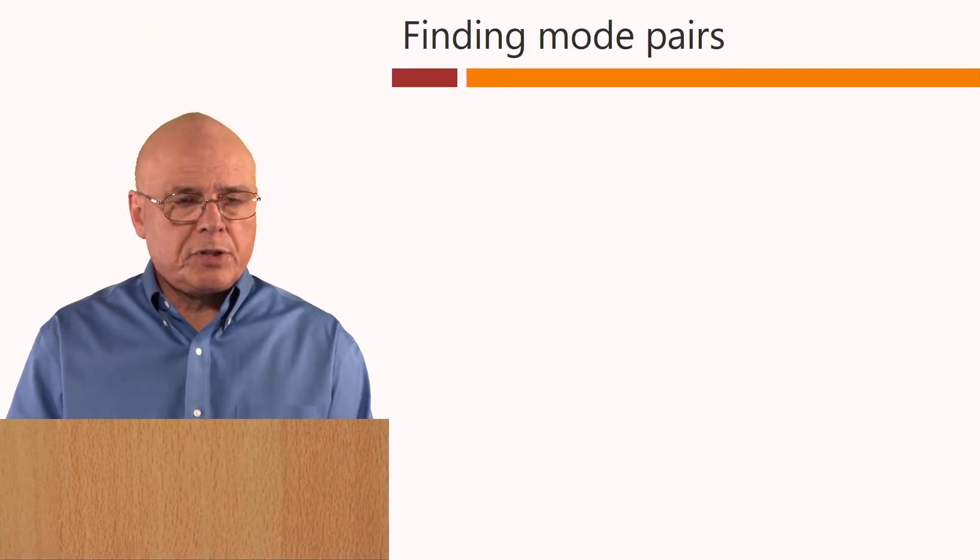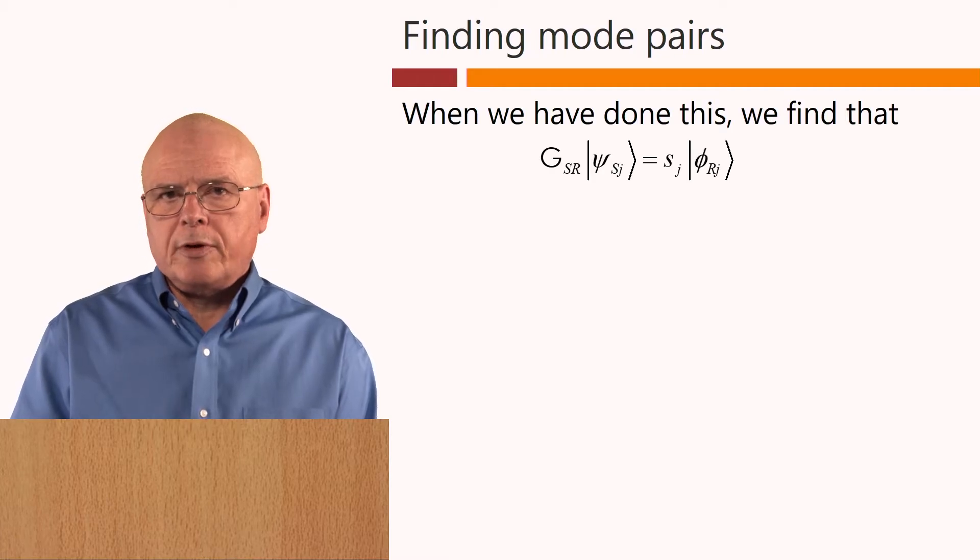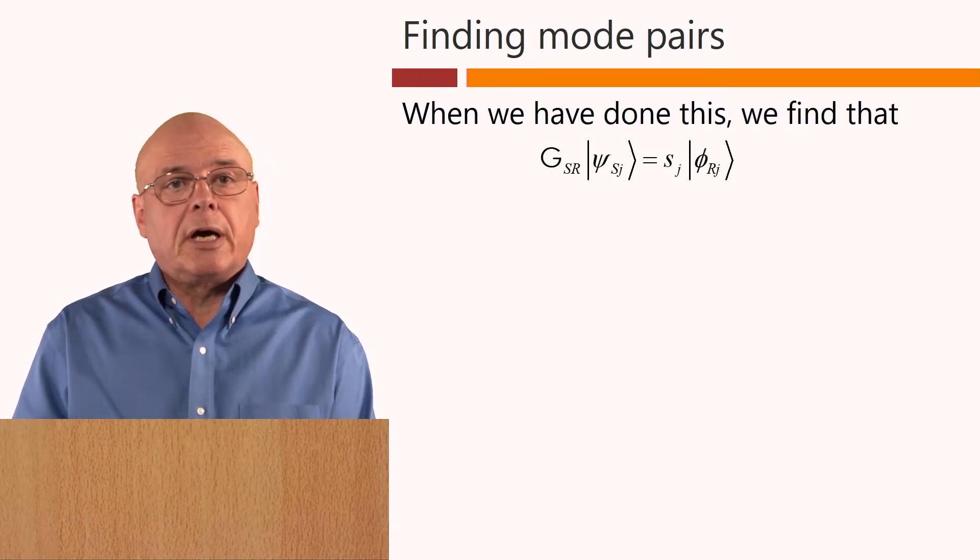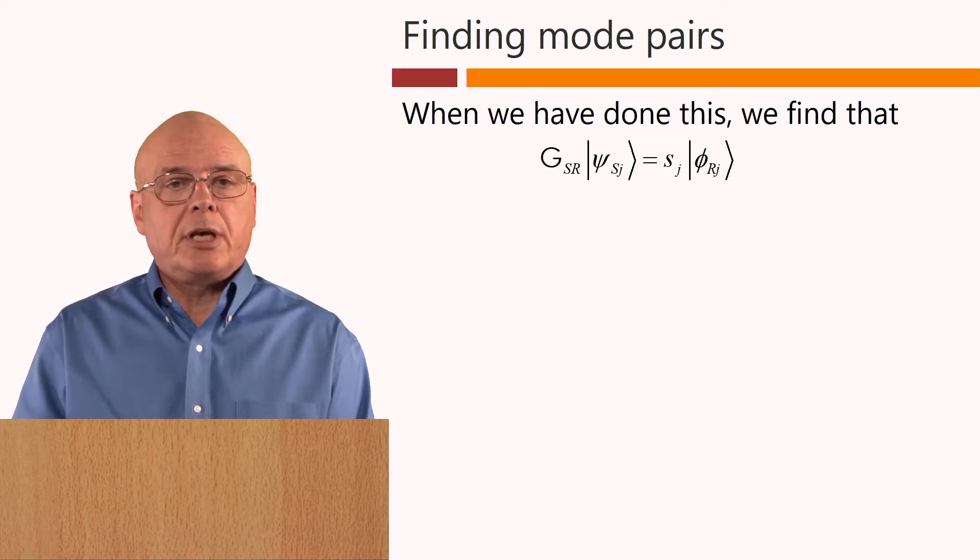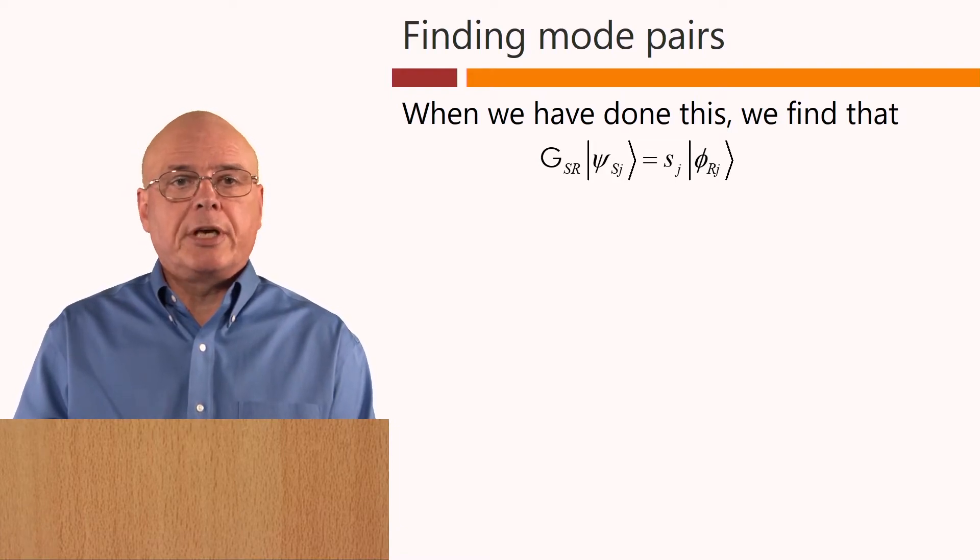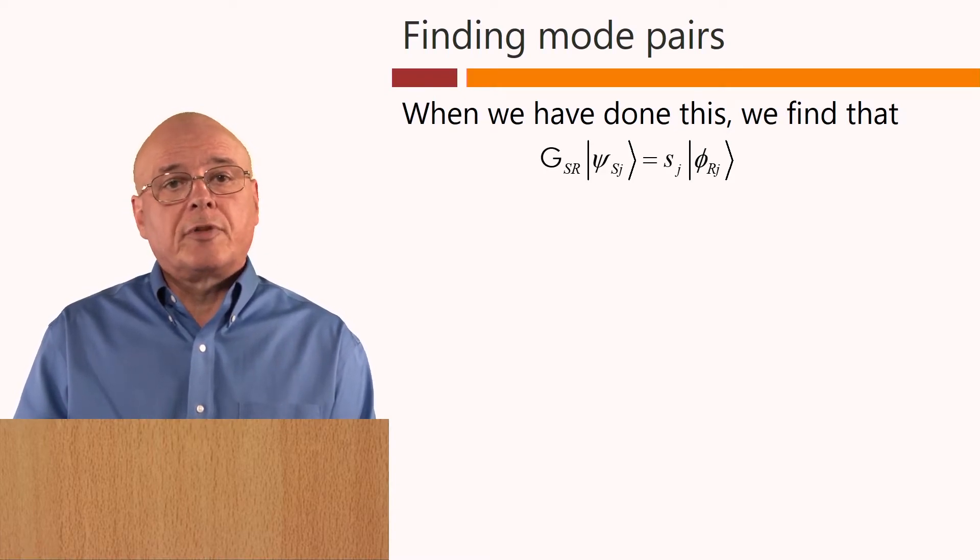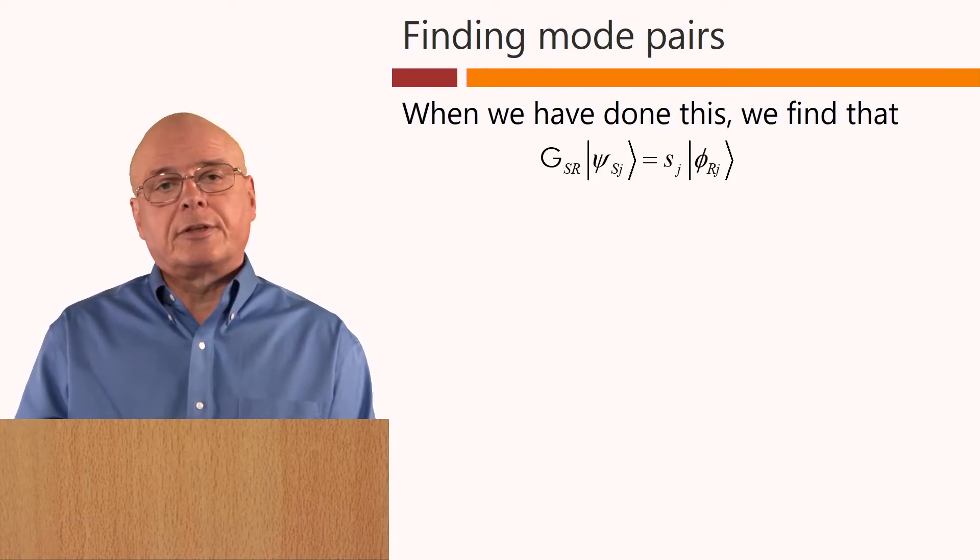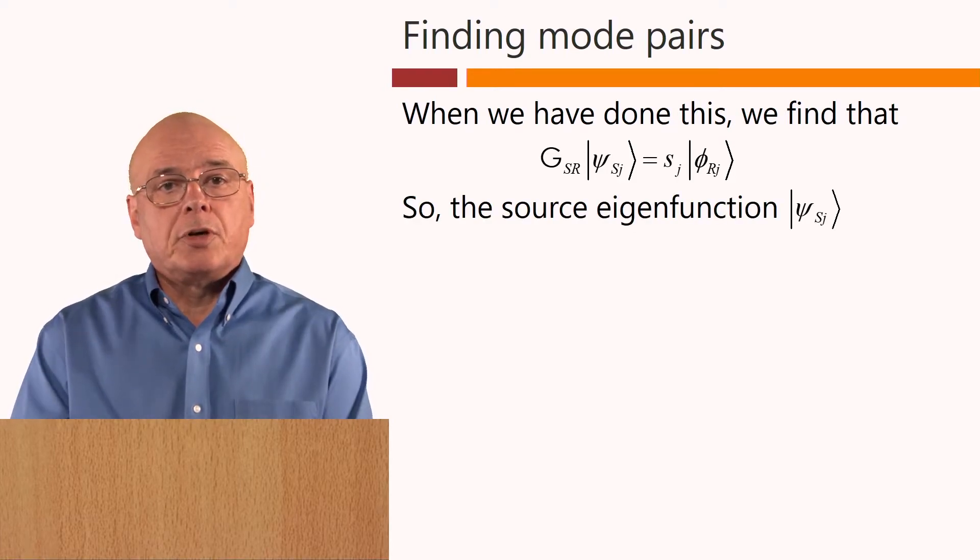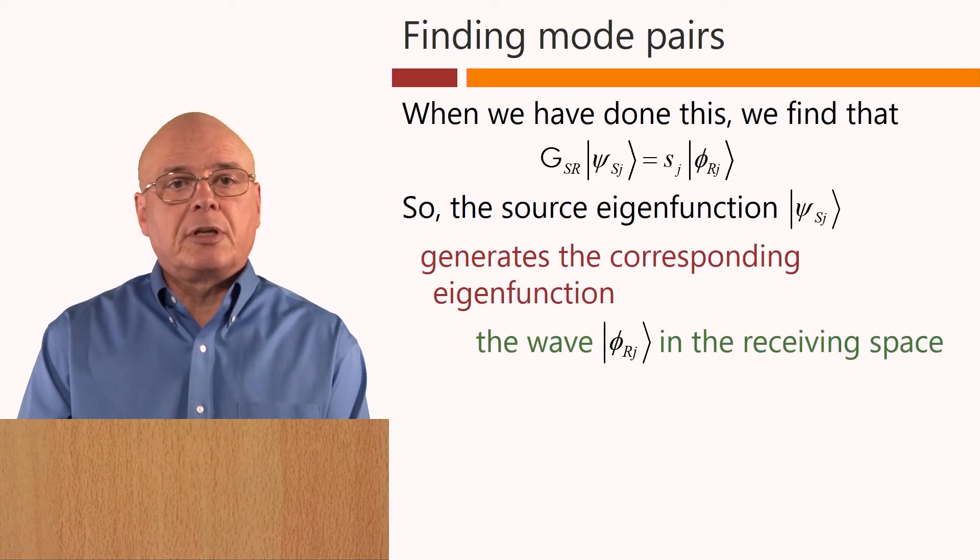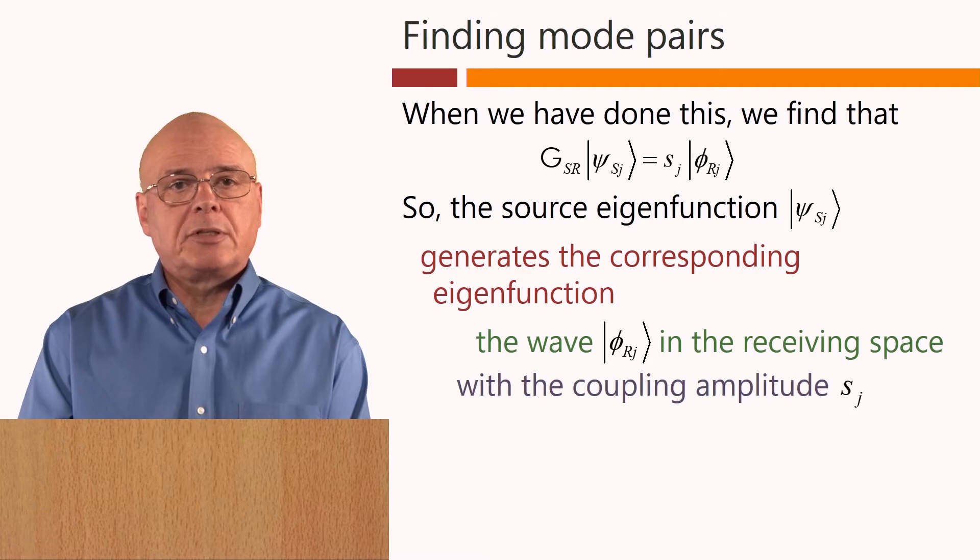Now, when we have solved these two problems, we find that if we operate on one of these source eigenfunctions, ψ_sj, with the coupling operator G_sr, we get S_j times the corresponding one of the receiving eigenfunctions, φ_rj. So the source eigenfunction generates the corresponding eigenfunction as the wave in the receiving space, with this coupling amplitude S_j.